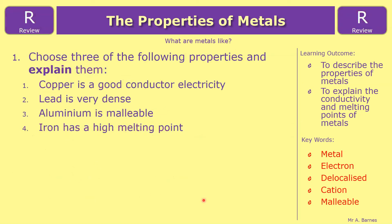Okay. That about sums up this video. So we'll have a look at the review section. Which is choose three of the following properties and explain them. Number one being copper is a good conductor of electricity. Number two. Lead is very dense. Number three. Aluminum is malleable. And number four. Iron has a high melting point. So three of the four. Choose them. And explain that property for me. That ends this video.